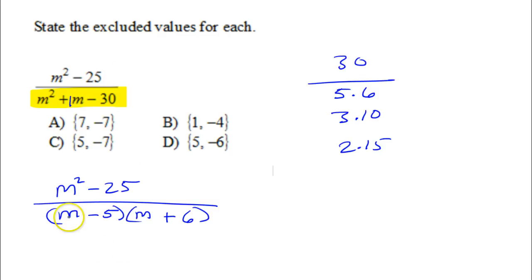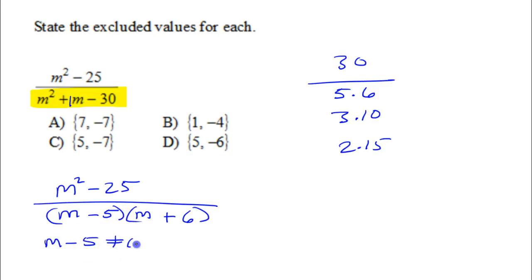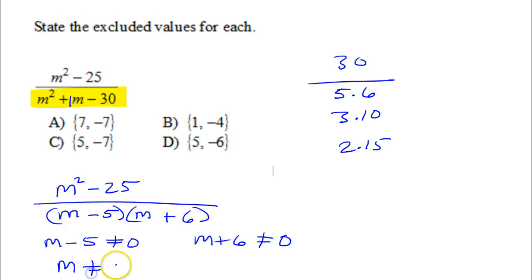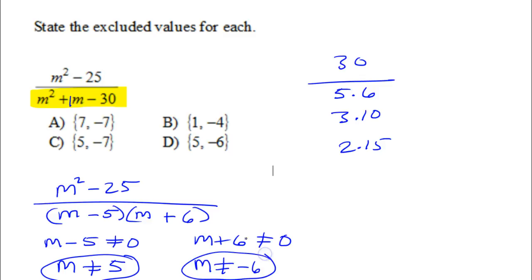You can't divide by 0, so neither one of these factors can equal 0. m minus 5 cannot equal 0, and m plus 6 cannot equal 0. Adding 5 to both sides tells me that m cannot equal 5. Subtracting 6 from both sides tells me that m cannot equal negative 6. So the excluded values are negative 6 and 5.